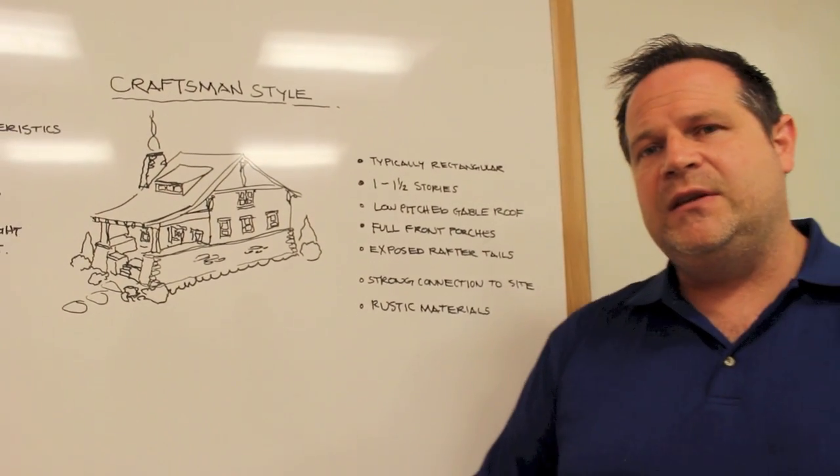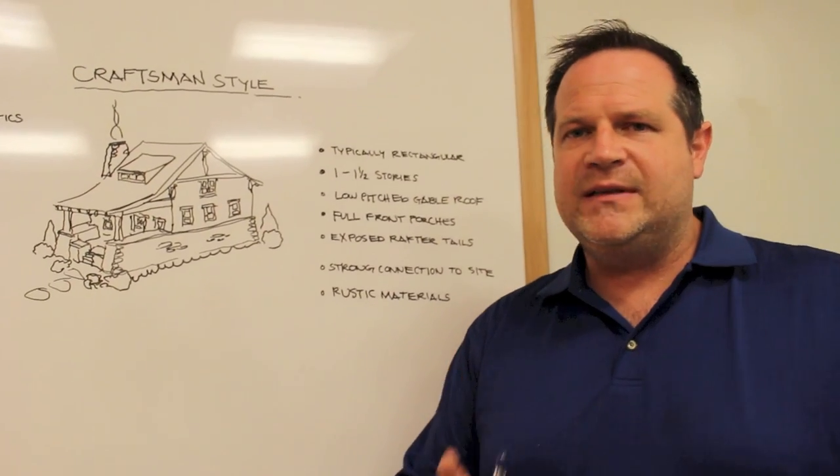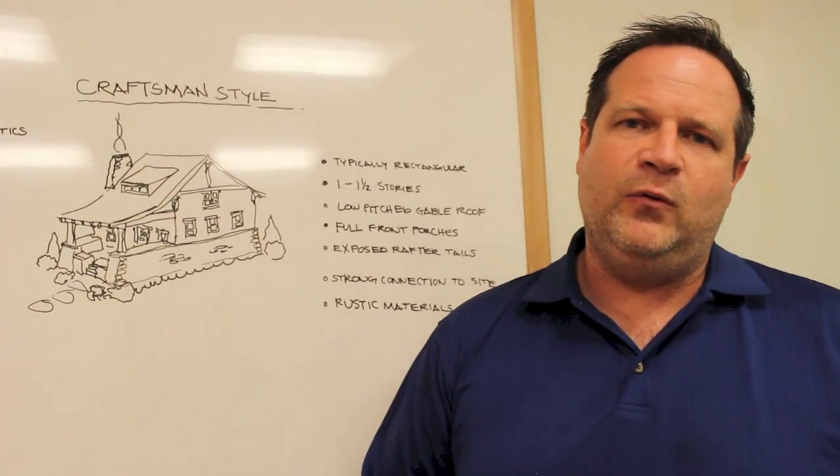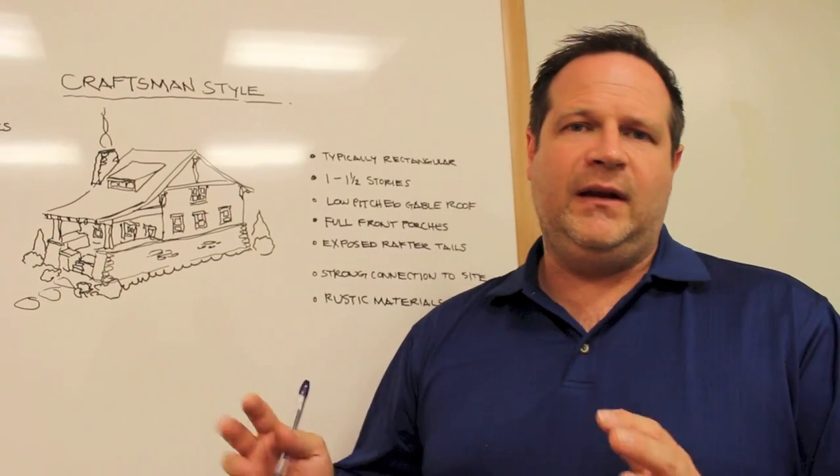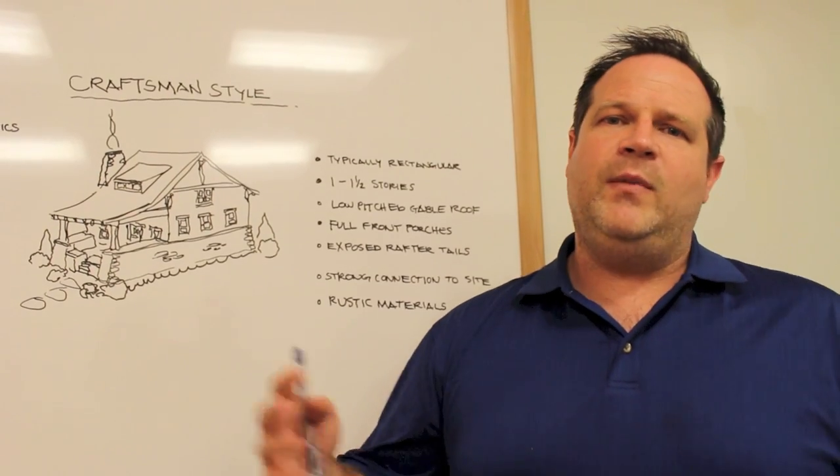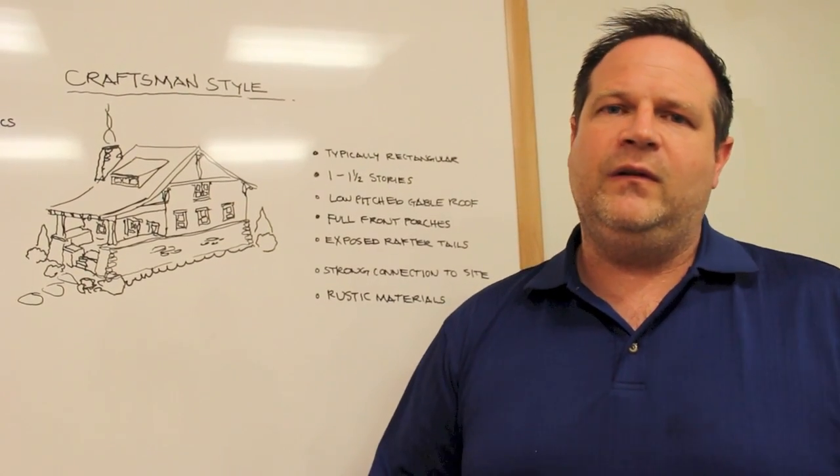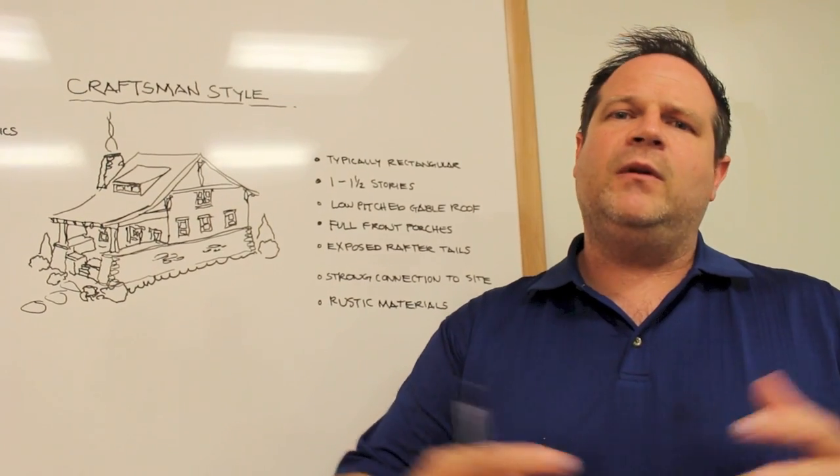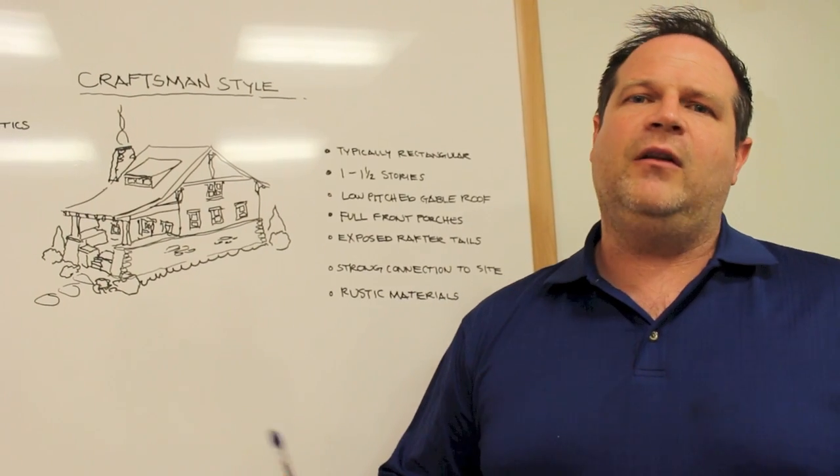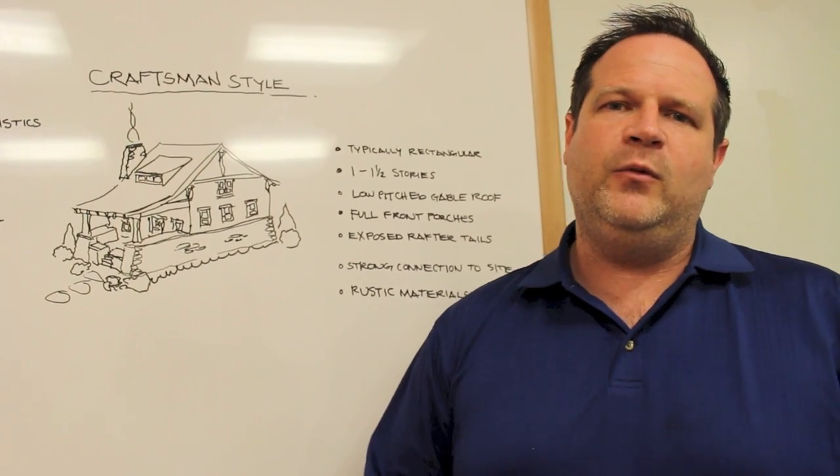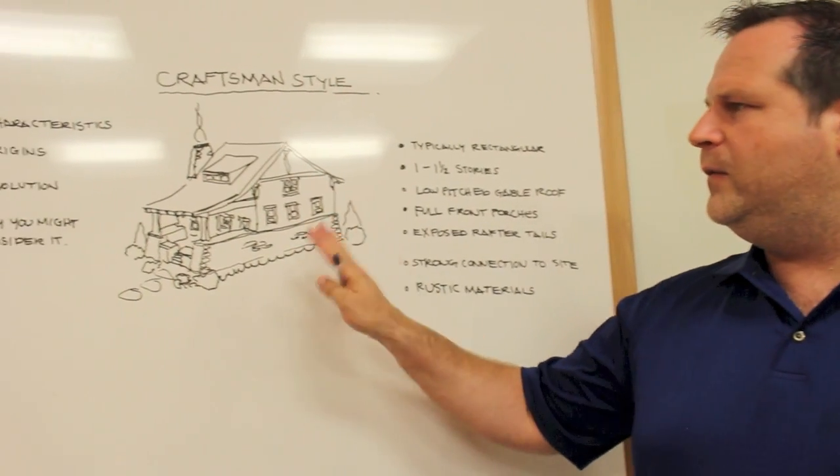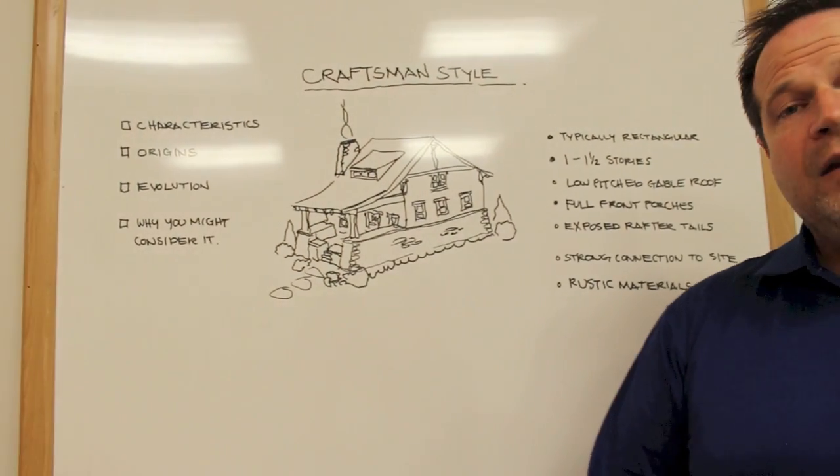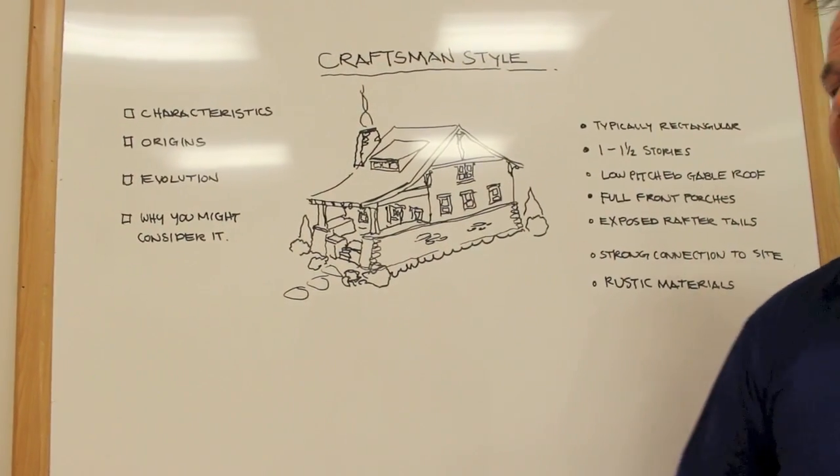One of the things that has changed is kind of how they're designed on the inside, how the plans are working. Obviously, a kitchen in 1935 is different than a kitchen today. We want that to be open and connected with the rest of the spaces. We want generally broader, more open spaces. Bedrooms need larger closets. We have more bathrooms, that sort of thing. But as a general rule, the overall style and the feel of the Craftsman house is very similar to how it was in the 1930s.